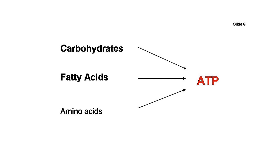Amino acids, which are the building blocks of proteins, can also be used to synthesize ATP in cells, usually when carbohydrates and fatty acids are scarce, for example during starvation.